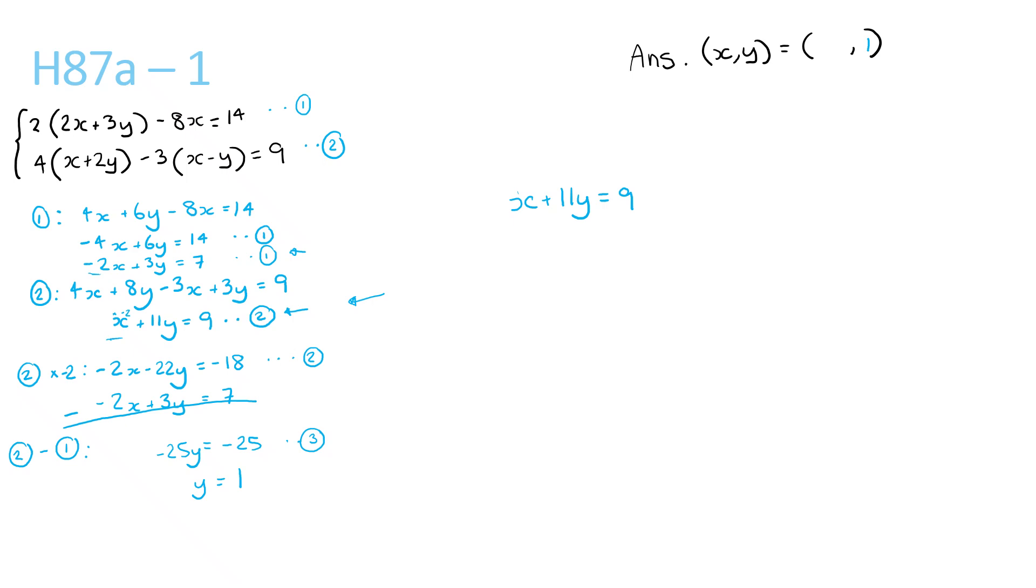Now we can just write above it, substituting y equals 1. Now we just replace all the y's in this equation with 1. So we have x plus 11 brackets 1 equals 9. x equals 9 minus 11. x equals negative 2. So our answers are negative 2 and 1.